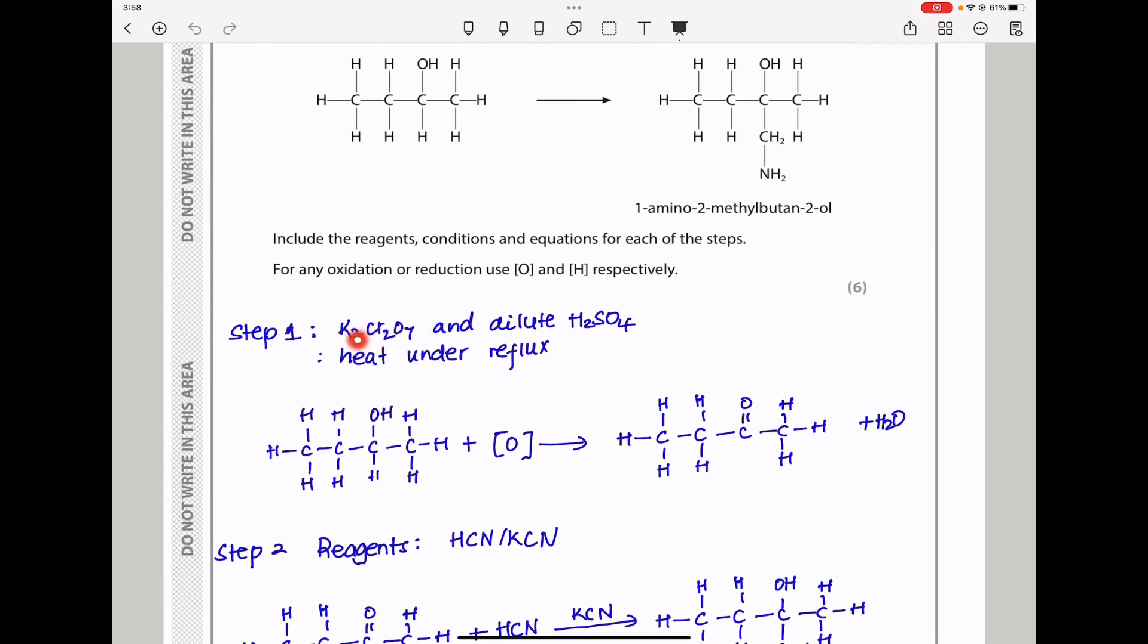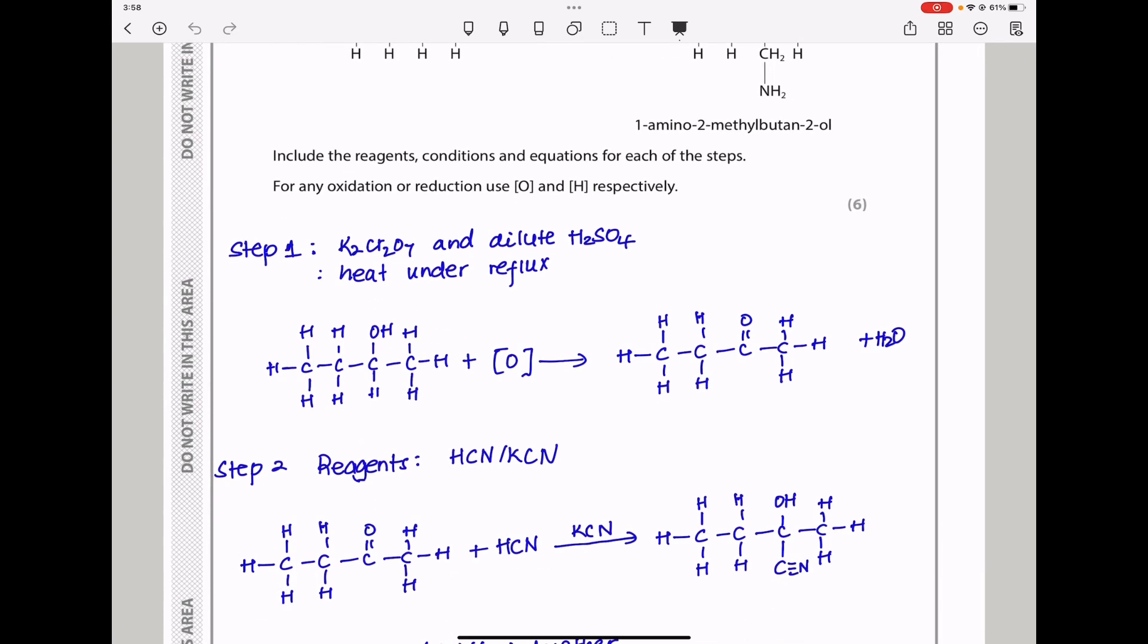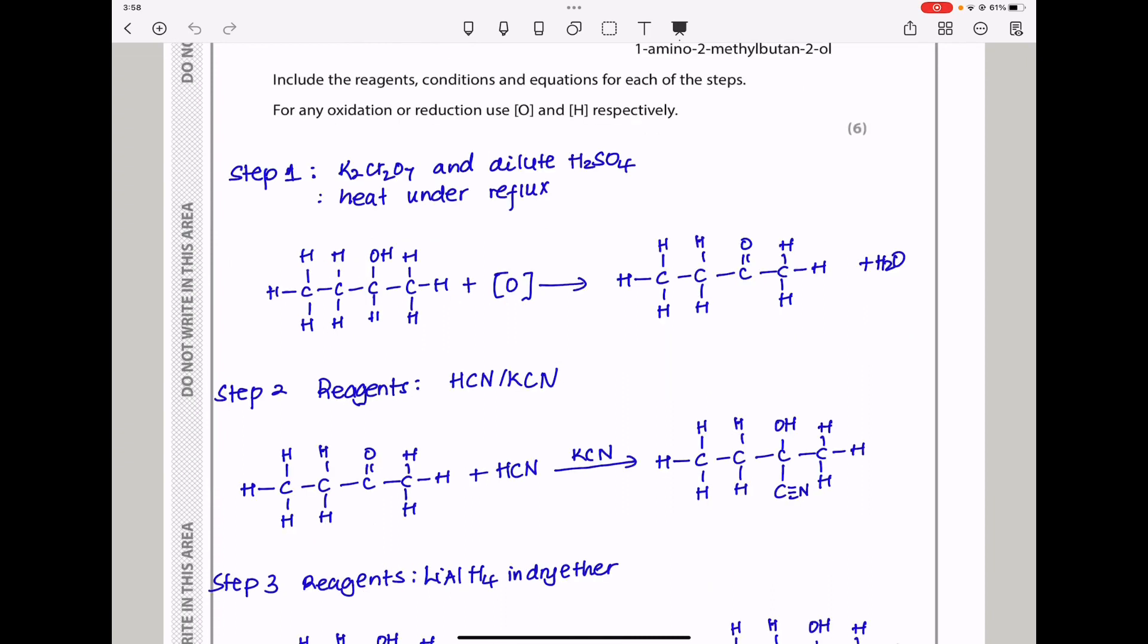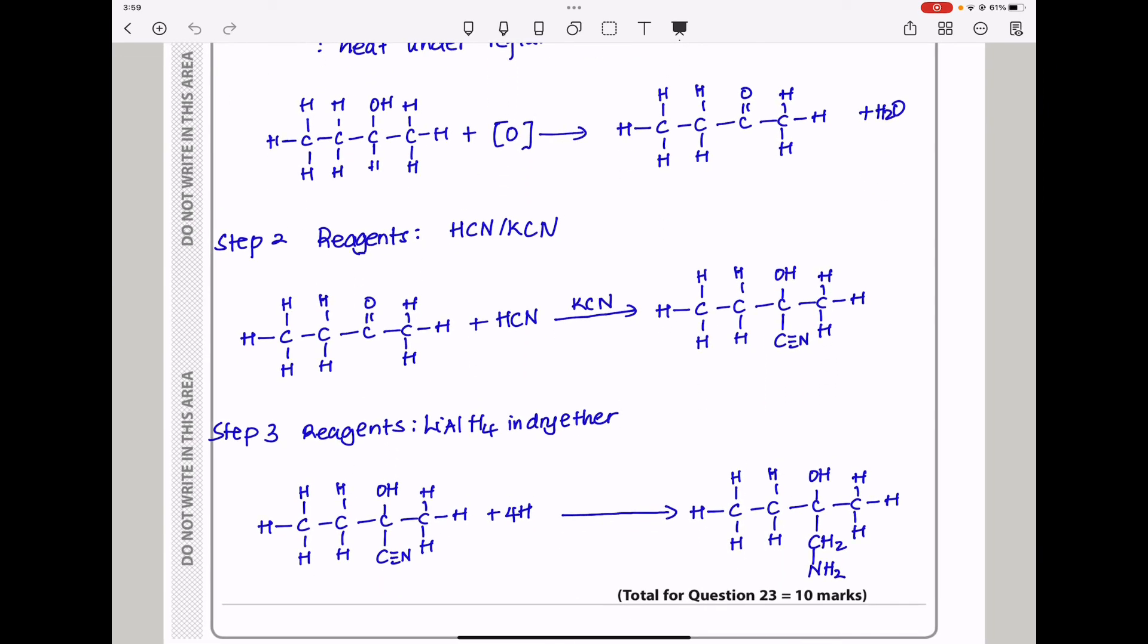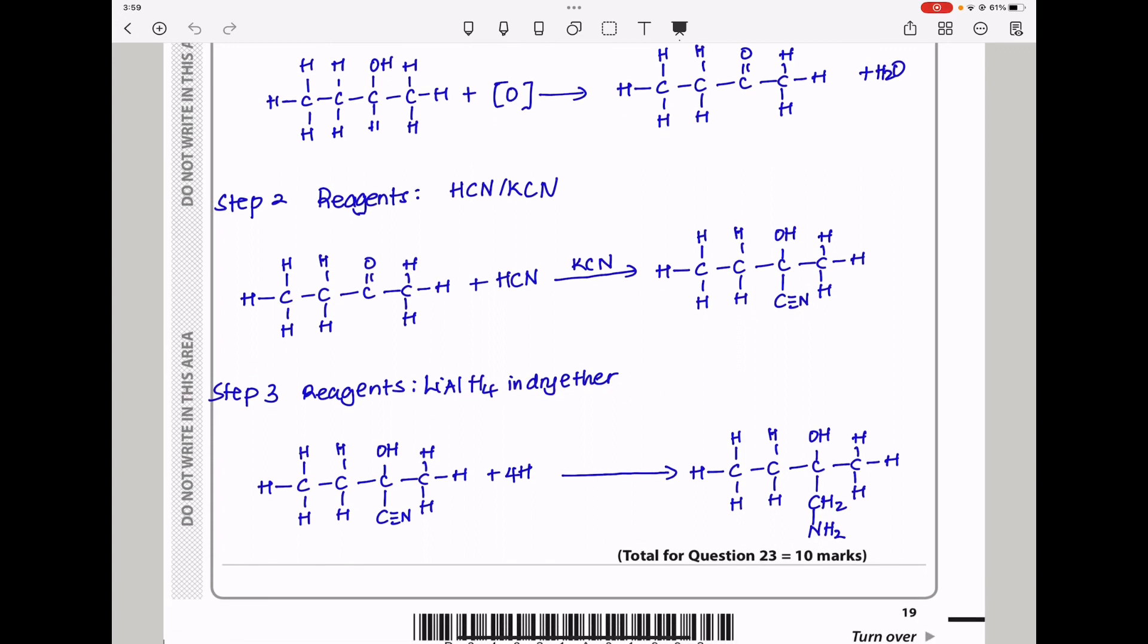In my first step, oxidation using potassium dichromate in dilute sulfuric acid, heat under reflux. The equation: secondary alcohol reacted with oxidizing agent produces a ketone. Then this ketone reacts with HCN in presence of KCN as catalyst, producing a hydroxy nitrile. Then this hydroxy nitrile is reduced using reducing agent LiAlH₄ in dry ether. The final product has CH₂ and NH₂ here in place of CN. This is our intended product and should be your answer.